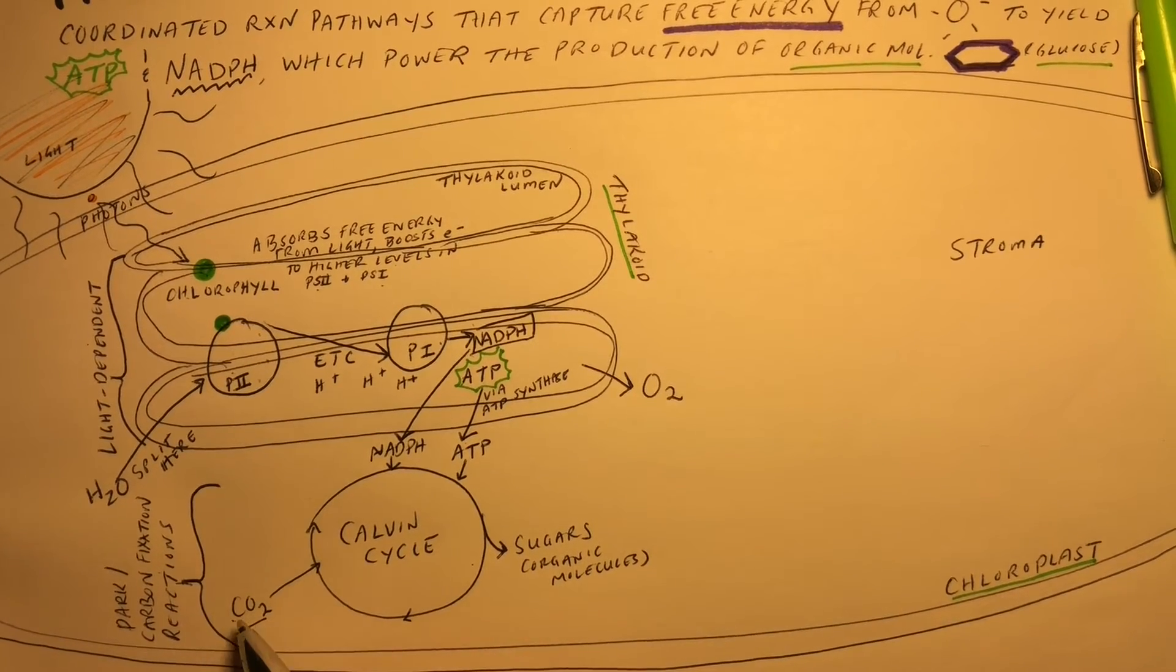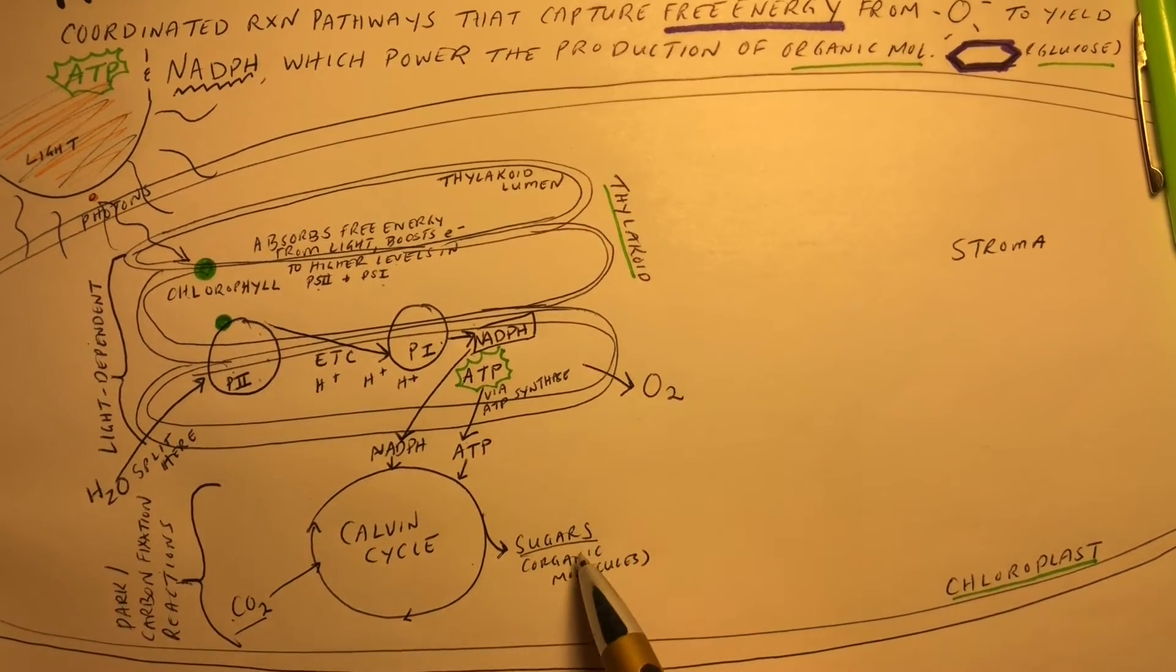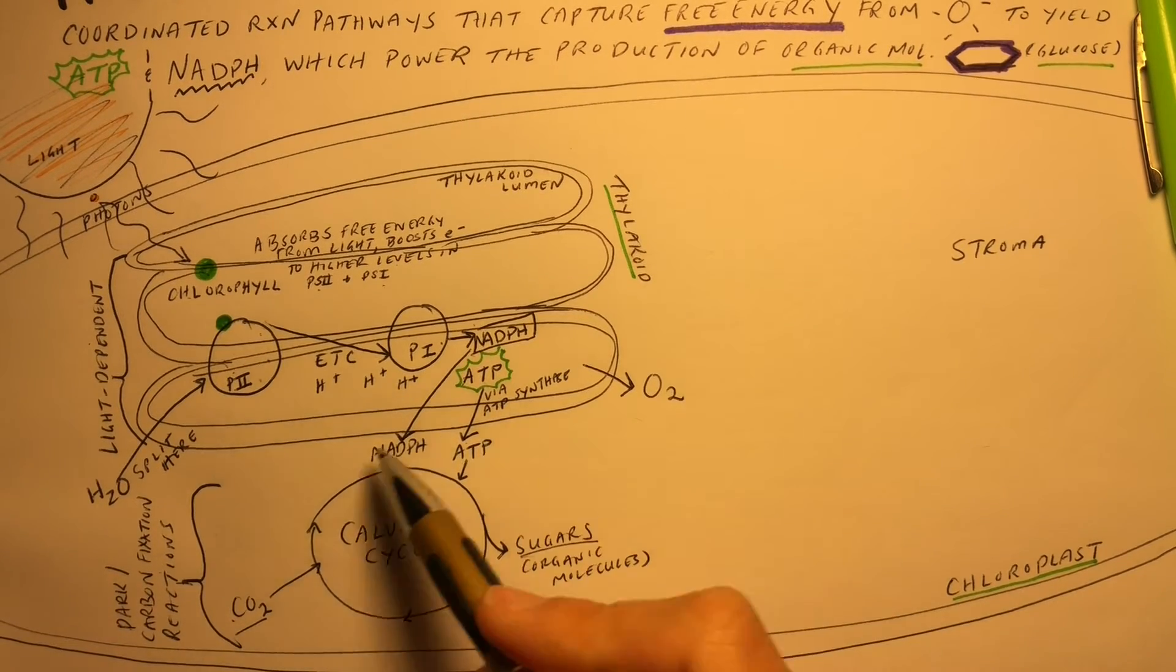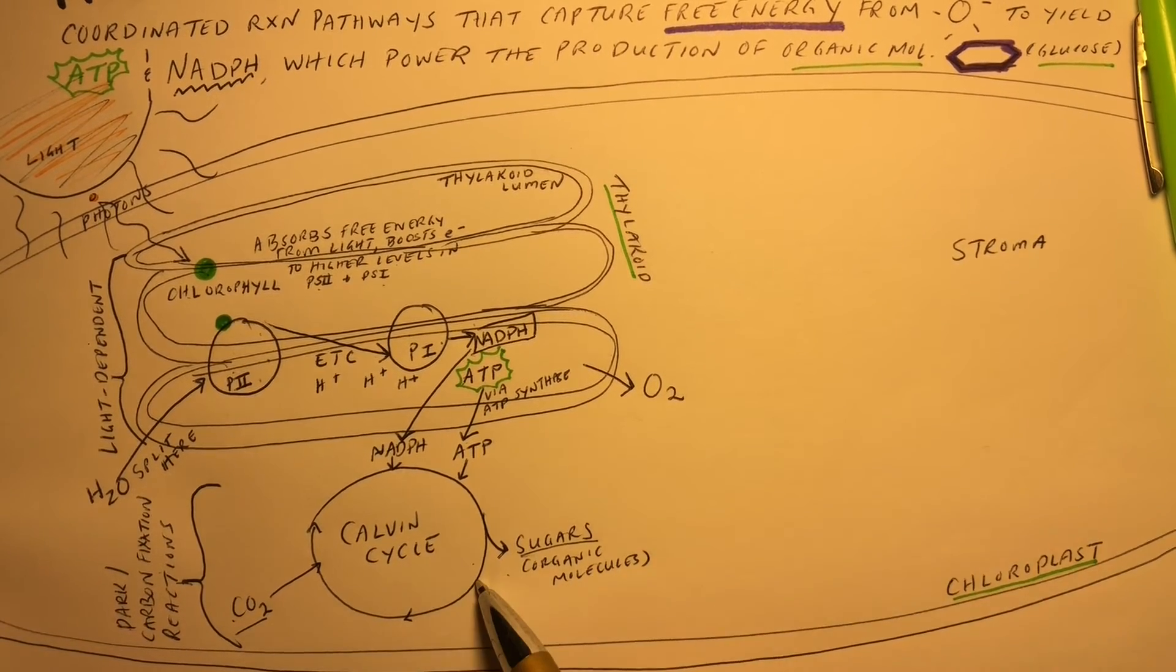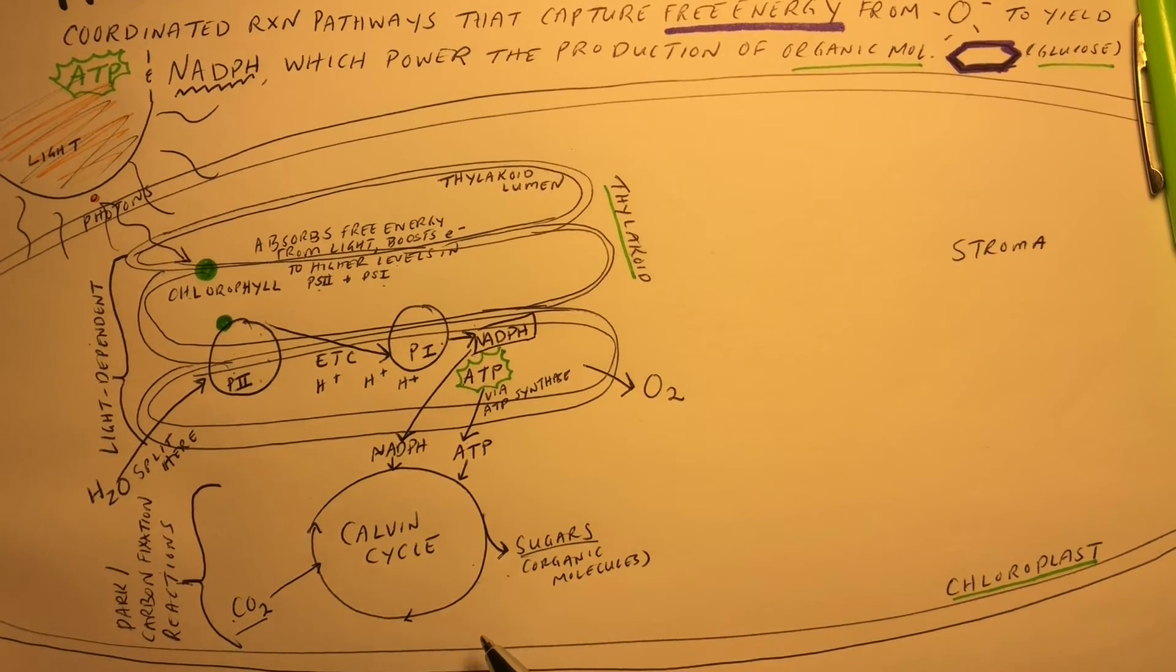Using the carbon from carbon dioxide, sugars, or organic molecules, are formed. And remember, all of this is occurring in the stroma of the chloroplast, not in the thylakoid.